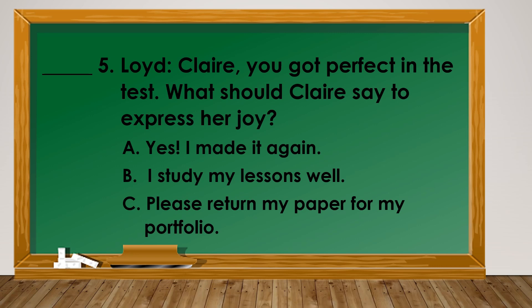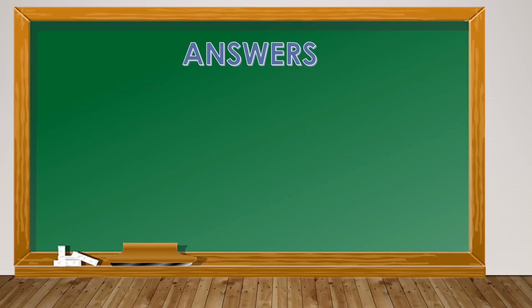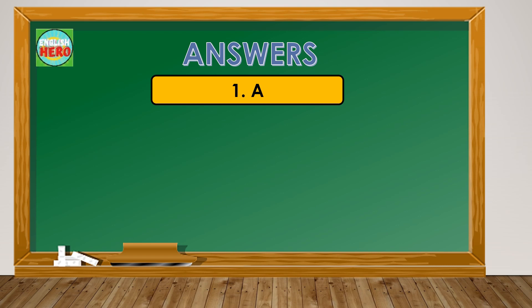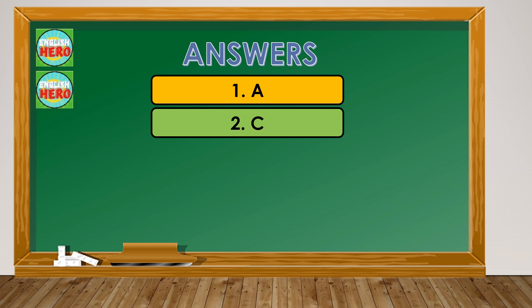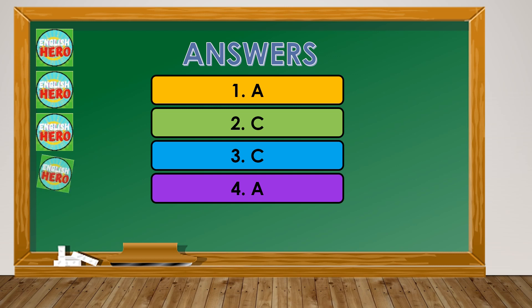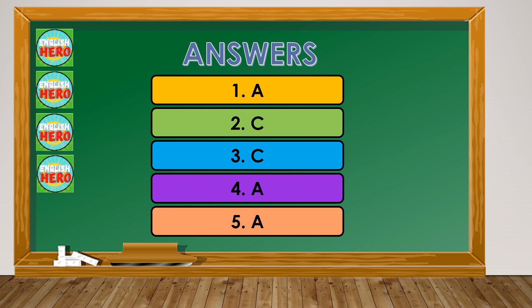Let us now check your answers. For number 1, the answer is letter A — here is your English hero badge. Number 2, the correct answer is letter C — here's another English hero badge. For number 3, the correct answer is letter C. For number 4, the correct answer is letter A — here's your 4th badge. And number 5, we have letter A. Congratulations! You have your 5 English hero badges.